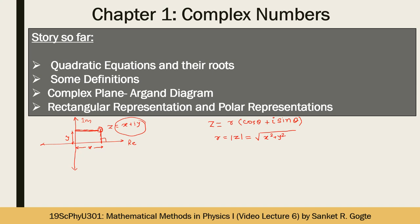Geometrically, r is the distance between the origin and the point representing the complex number. The argument θ can be calculated by the formula tan⁻¹(y/x). Geometrically, θ is the rotational angle made by the line joining the origin to the point representing the complex number with the positive real axis. Since it is a rotational angle, it can be either positive or negative.